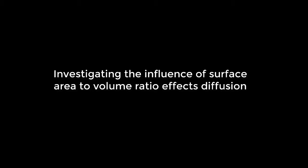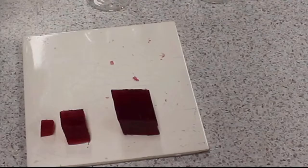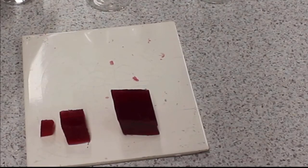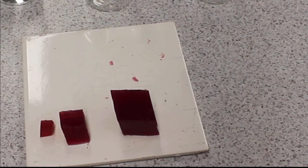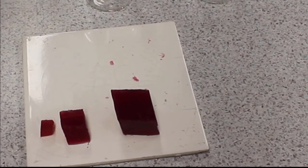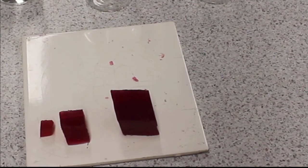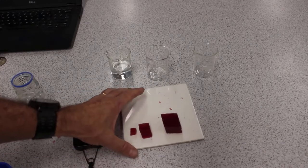This experiment investigates the influence of surface area to volume ratio on diffusion. We use phenylphthalein impregnated gelatin. Phenylphthalein is an indicator that is pinky red in the presence of a base, but in the presence of an acid it turns clear.